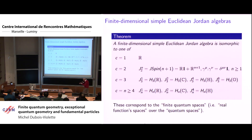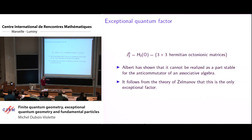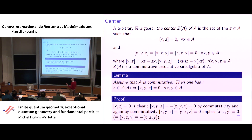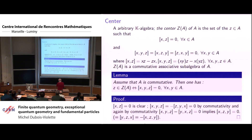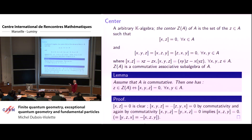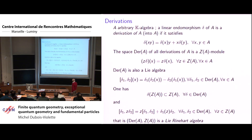The exceptional algebra of three-by-three Hermitian octonionic matrices is exceptional, as I announced. Let me remind you of the notion of the center of an arbitrary non-associative algebra. The center consists of elements which commute with everybody and associate with everybody, where the triple bracket means the associator. The derivations are morally the infinitesimal automorphisms — they are the analog of vector fields when you look at functions over a smooth manifold.